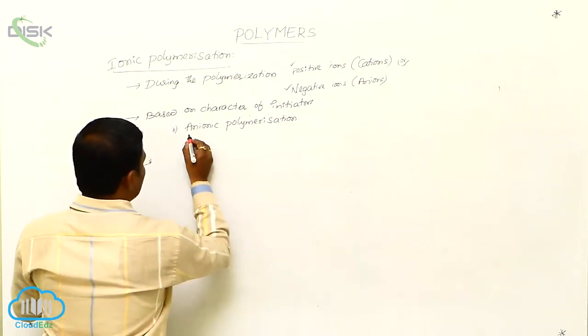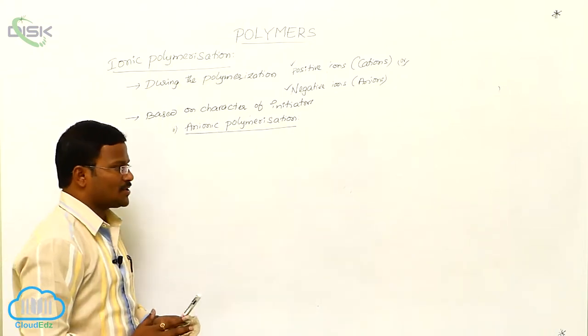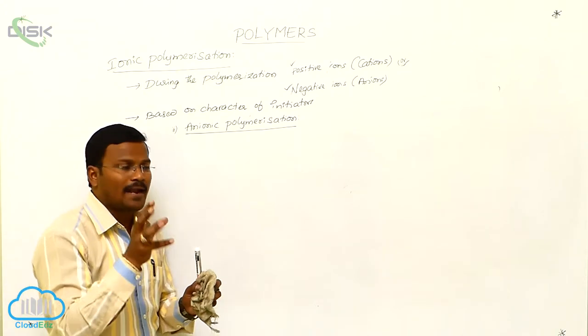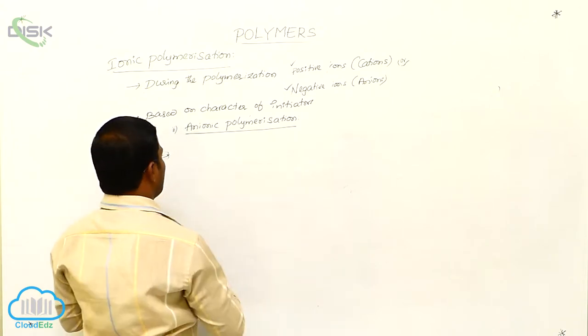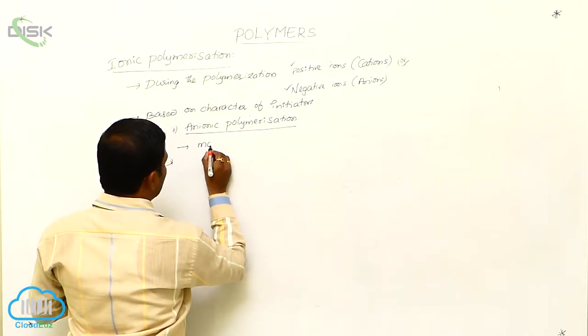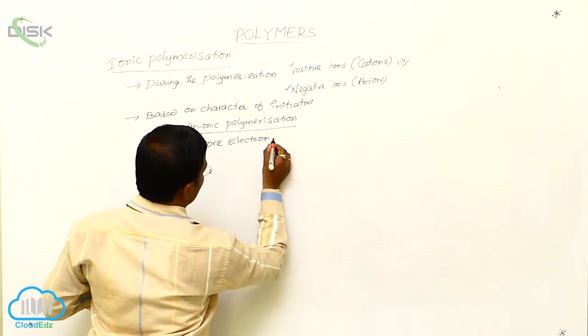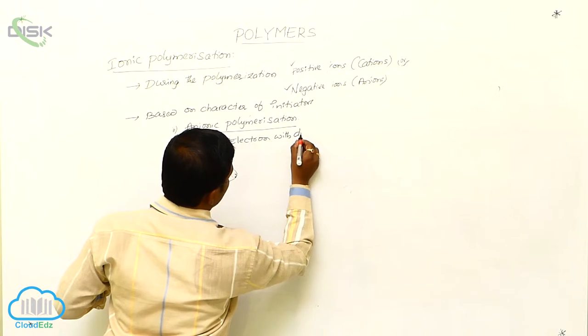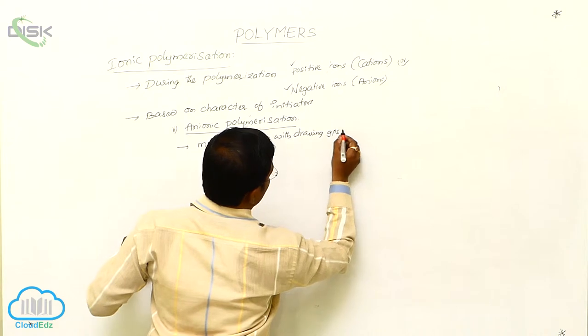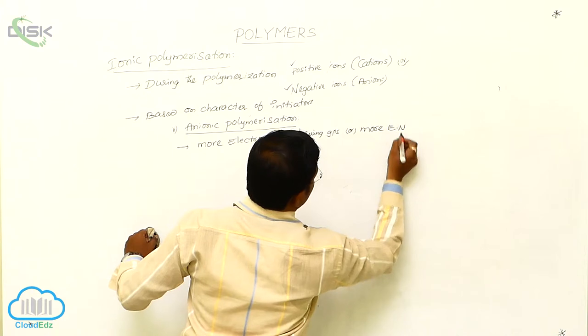Once again, what are anionic polymerization reactions? Those polymerization reactions in which initiators are negative species or anionic species are called anionic polymerization. Generally, those monomers which are having more electron withdrawing groups or more electronegative groups.